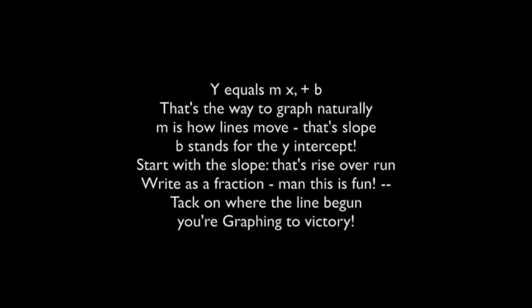y equals mx plus b. That's the way to graph naturally. m is how lines move — that's slope. b stands for the y-intercept. Start with the slope — that's rise over run. Write it as a fraction. Man, this is fun. Tack on where the line's begun and you're graphing to victory.